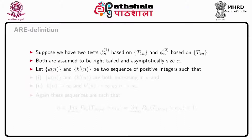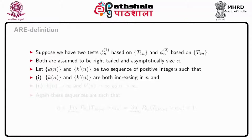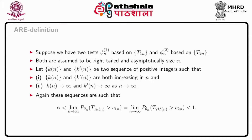Suppose we have two tests phi_n1 based on T1_n and phi_n2 based on T2_n. Both tests are assumed to be right-tailed and asymptotically size alpha. Let k_n and k prime_n be two sequences of positive integers, both increasing and tending to infinity as n tends to infinity, such that the power of phi_1n and the power of phi_2n both lie in the open interval (alpha, 1).